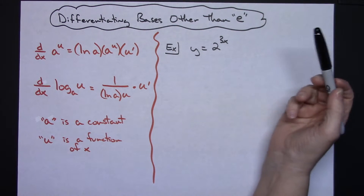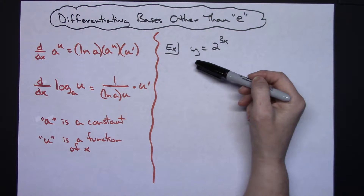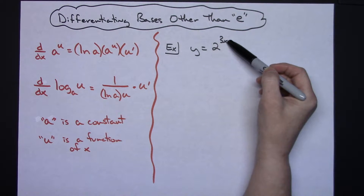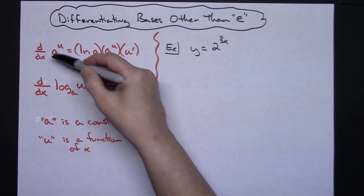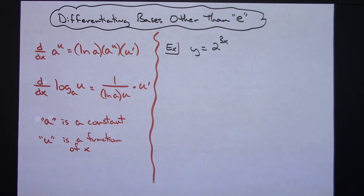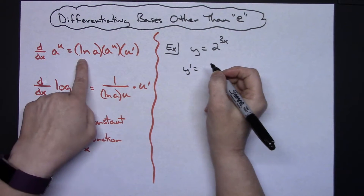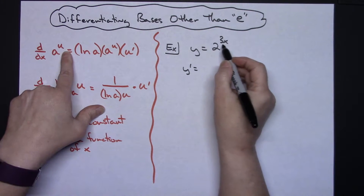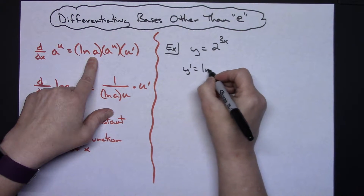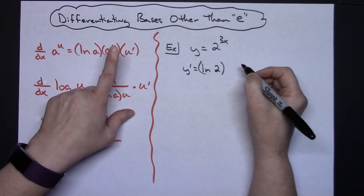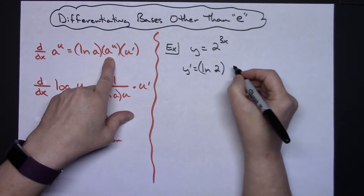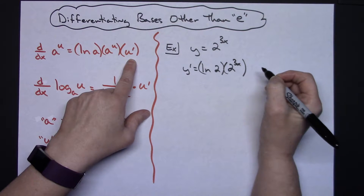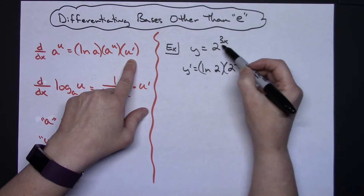On the first example it's going to be a relatively straightforward case. Let's say I've got y equals 2 raised to the 3x. My base is a constant and the exponent is a function of x, so I can implement the first formula. So y prime equals: my base a is 2 and u is 3x, so I write natural log of 2 times 2 raised to the 3x times the derivative of u — the derivative of 3x.